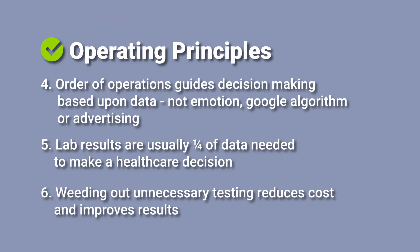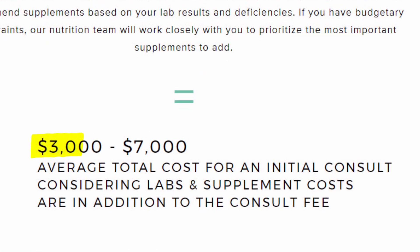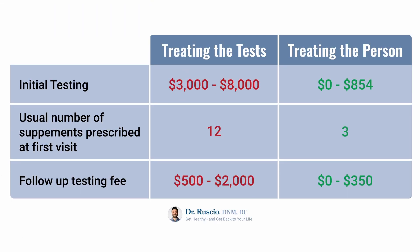Guess what happens when you weed out these unnecessary tests? Better results in less time and with less cost. That leads to principle six: weeding out unnecessary testing reduces cost and improves results. As an example, we pulled a few different clinics' initial lab bills from the internet. What you see is the treating-the-test model — you can see $3,000 to roughly $8,000 of lab testing fees — whereas at our center we come in at either zero for some cases or about $900 for others. This correlates to the average number of supplements: not unusual to start off with 12 supplements at some clinics, and we start off at three. Follow-up testing can be $500 to $2,000 at other clinics, and our clinic is usually nothing to $350.